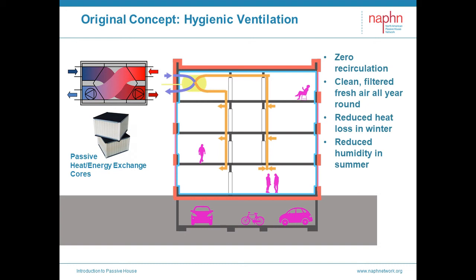Typical buildings have ventilation systems — just typically bad ones — often providing only intermittent exhaust from bathrooms and kitchens that don't ensure good ventilation everywhere. In commercial buildings, the ventilation system often includes a lot of recirculated air. In a passive house building, we supply 100% fresh air to every served space — the bedrooms, living rooms, offices, classrooms — and 100% exhaust from every service area — the bathrooms, kitchens, and utility areas — operating continuously, 24/7. The systems are laid out to ensure that all spaces have robust ventilation, with zero recirculation.